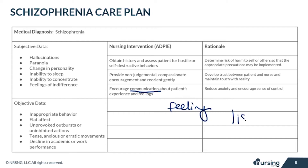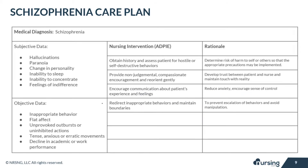Encourage communication about the patient's experiences and feelings — listening is the most important thing you can do. Help them reduce their anxiety and encourage a sense of control. Redirect inappropriate behaviors and maintain boundaries, preventing escalation and avoiding manipulation.